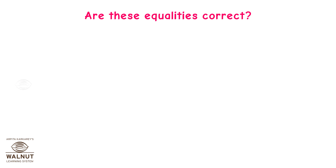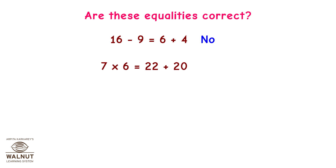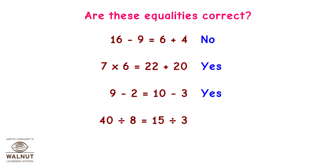Are these equalities correct? 16 minus 9 is equal to 6 plus 4 — No. 7 into 6 is equal to 22 plus 20 — Yes. 9 minus 2 is equal to 10 minus 3 — Yes. 40 divided by 8 is equal to 15 divided by 3 — Yes. 10 minus 4 is equal to 2 into 2 — No.